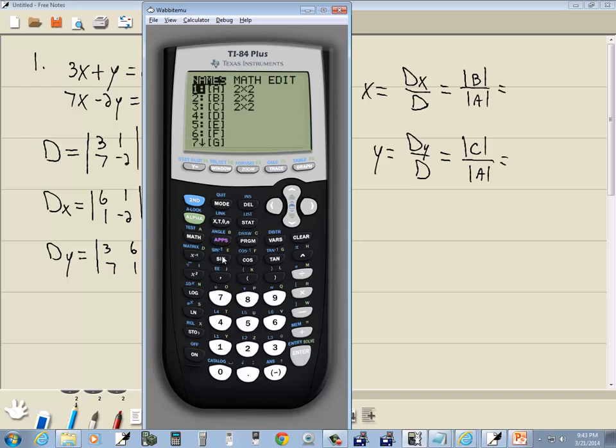Back into my matrix menu, second x to negative 1, down arrow to B, enter. Close parentheses on determinant, divided by. And then I'll do second x to negative 1, right arrow to math, enter on det. Go back to the matrix menu, enter on A. And I'll put a closing parentheses, even though you don't need the very end, and press enter. And that's going to give us x equals 1.